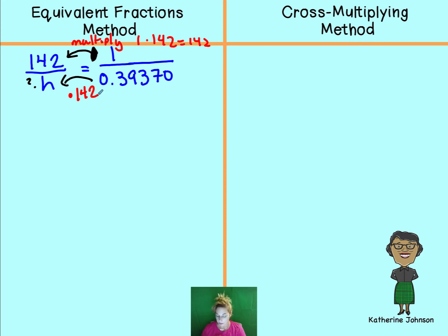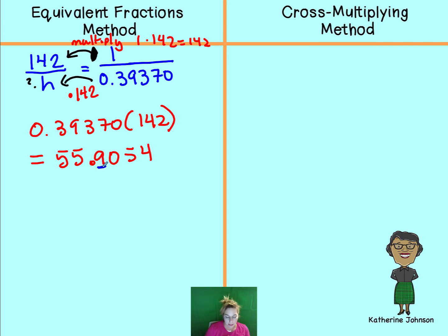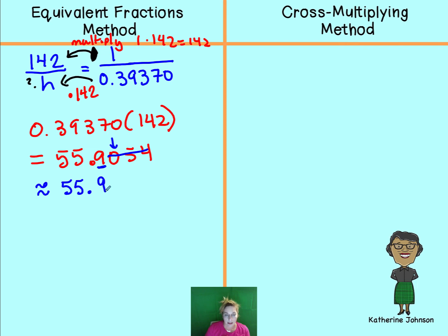Using a calculator, multiply 0.39370 by 142. The calculator gives a value that we round to the nearest tenths place. The tens digit is 9, and looking to the right it's zero — less than five — so we drop everything after. The result is approximately 55.9 inches.